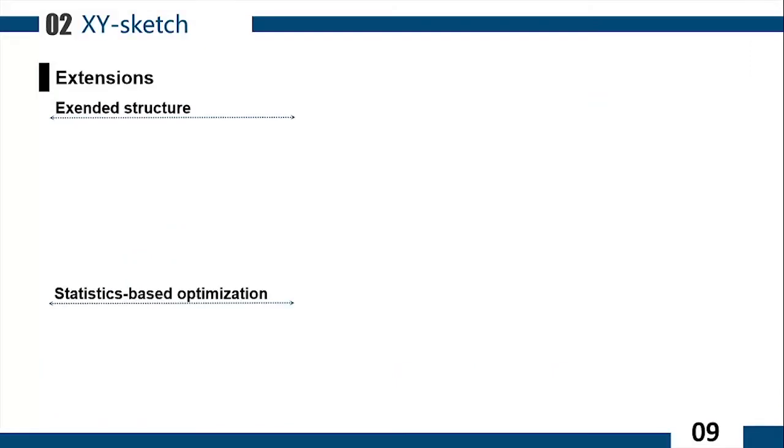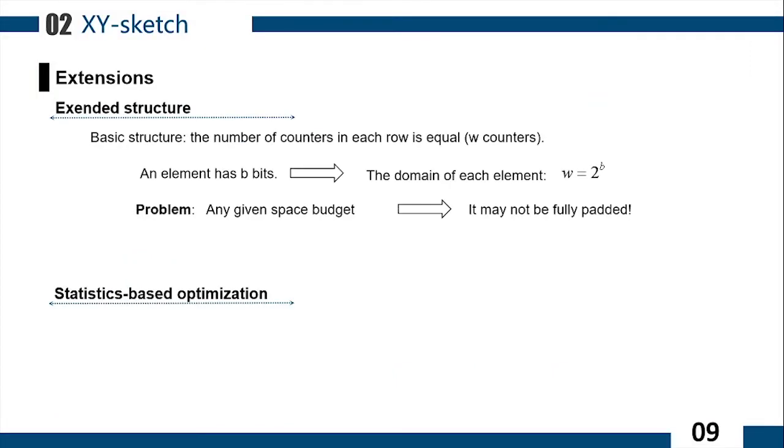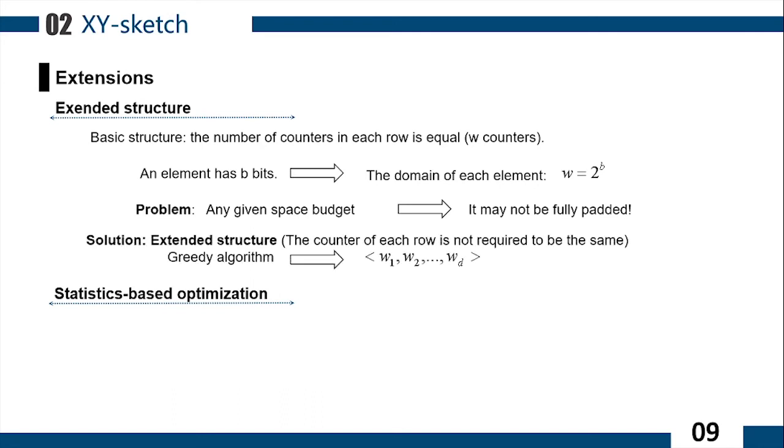In the XY-Sketch described above, all elements have B bits. Therefore, the domain of each basic element is the same. We call these XY-Sketch structures the basic structure because the number of counters in each row is the same. This will lead to a problem. For any given space budget, it may not be fully utilized.